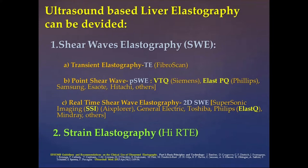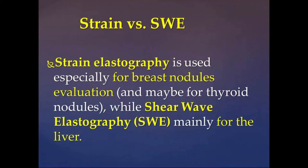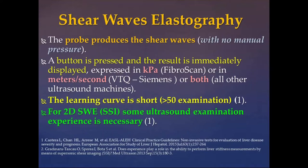The first system in the real-time family was Supersonic Imagine (SSI), then systems from Toshiba, Philips, Mindray, and others. For strain elastography, the first was Hitachi RTE. Strain elastography is used mainly for breast nodule evaluation, and also for thyroid, ligaments, and tendons, while shear wave elastography is used mainly for the liver, and I will focus specially on SWE.